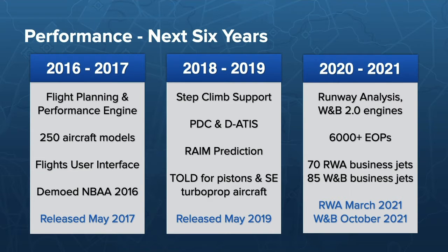First, we started in the first two years around flight planning specifically. We developed a very capable global planning engine, and you can also file with that as well. We started off with 250 aircraft models — these are your high-fidelity climb, cruise, and descent performance models with thousands of numbers covering multiple altitudes, temperatures, and weights, way beyond the eight that we had. As of today, we've just surpassed 900 aircraft variants supported.